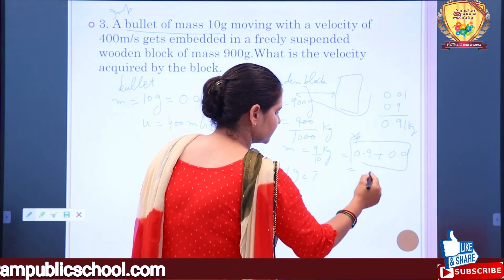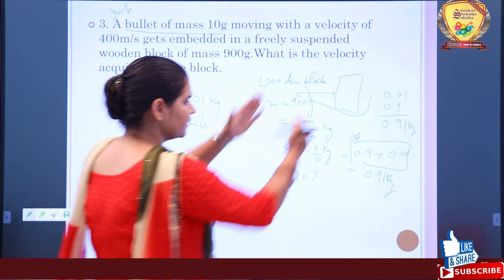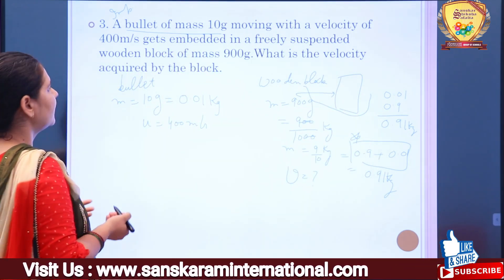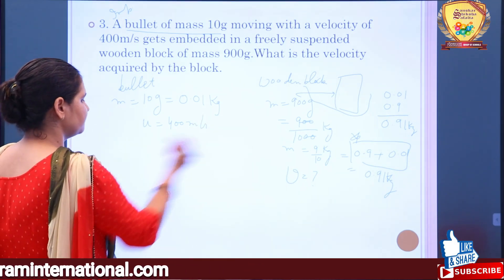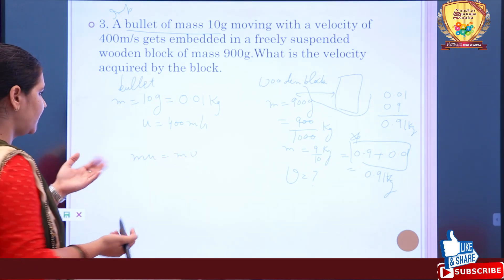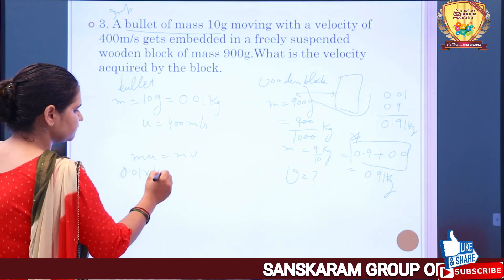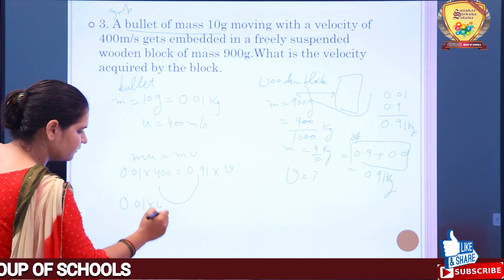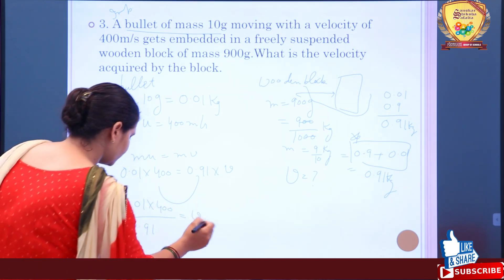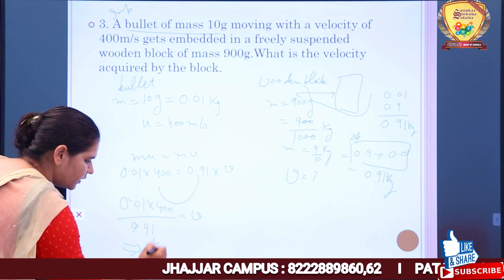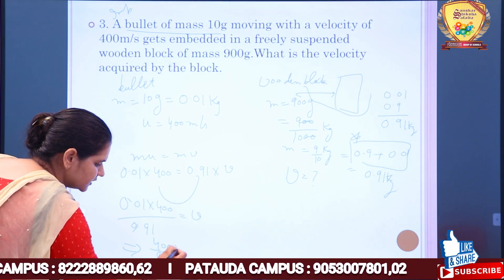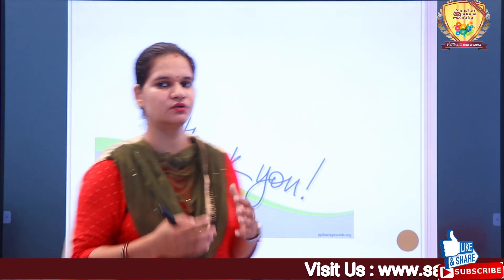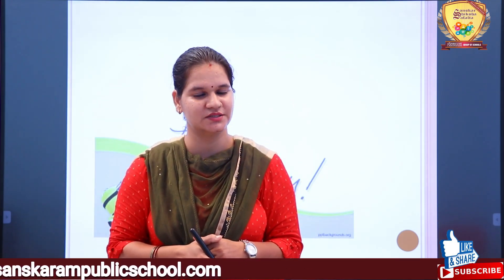Applying conservation of momentum: m×u = (m+M)×V. So 0.01 × 400 = 0.91 × V. Removing decimals: 4 = 0.91V, so V = 400/91 meter per second. This was a very important question and must be done carefully. I hope all these numericals are clear to you. Thank you very much.